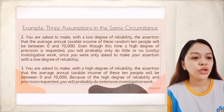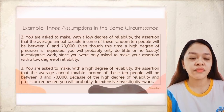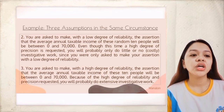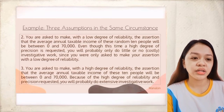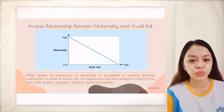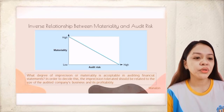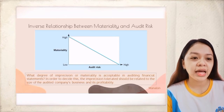In the third situation, you are asked to make, with a high degree of reliability, the assertion that the average annual taxable income of 10 people will be between $0 and $70,000. Because both high reliability and high precision are requested, you will probably do extensive investigative work. Both the reliability level and the tolerance for materiality are high, requiring extra effort from the auditor. This demonstrates the inverse relationship between materiality and audit risk — when materiality is high, audit risk is low, and vice versa.